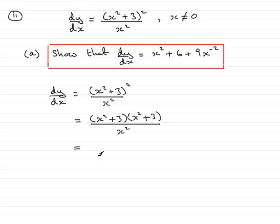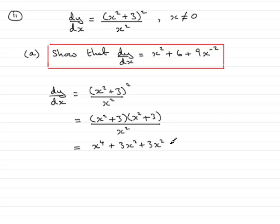Expanding the top out, we get x² times x², which is x⁴. Then x² times 3, which is 3x². Then 3 times x², which is another 3x². And finally 3 times 3, which is 9. And that is all divided by x².